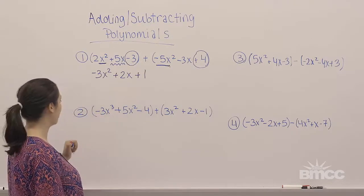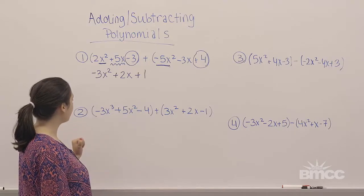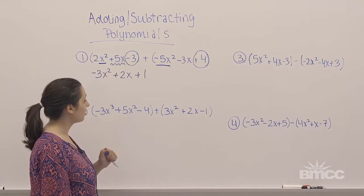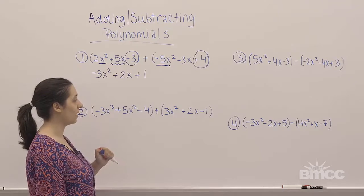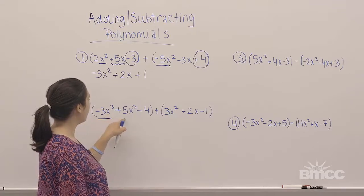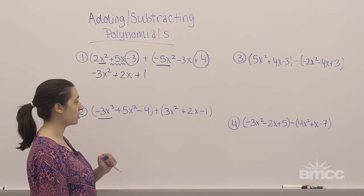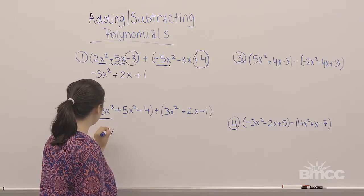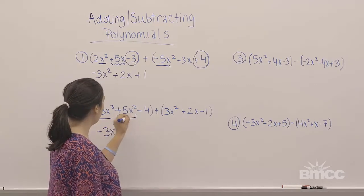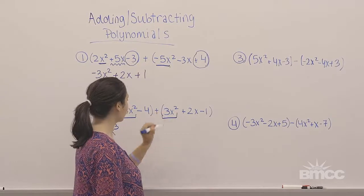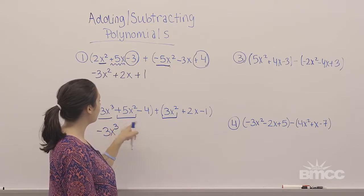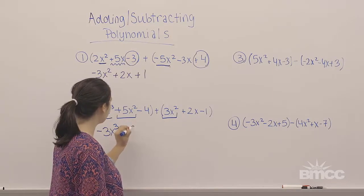Now let's look at another example. Our next example is negative 3x cubed plus 5x squared minus 4 plus 3x squared plus 2x minus 1. Our first term is negative 3x cubed — no other term has x cubed, so we rewrite it. Our next term is positive 5x squared. Positive 5x squared and positive 3x squared are like terms because they both have x raised to the second power.